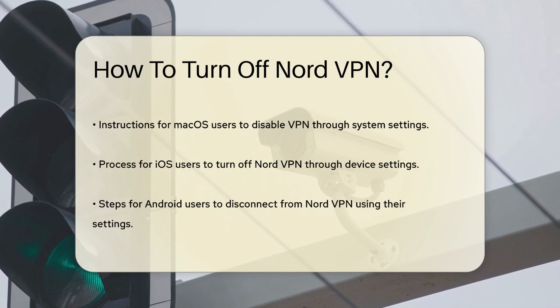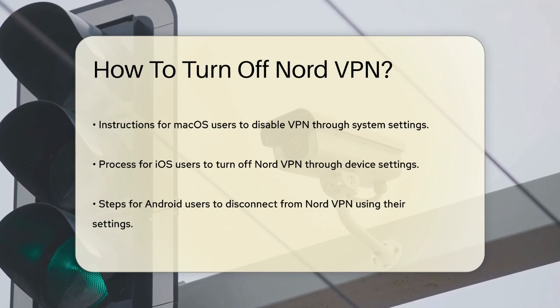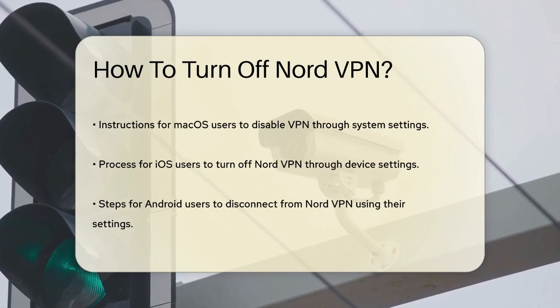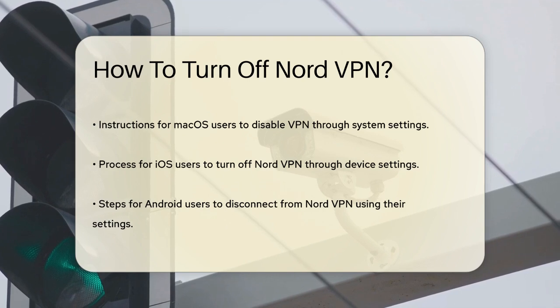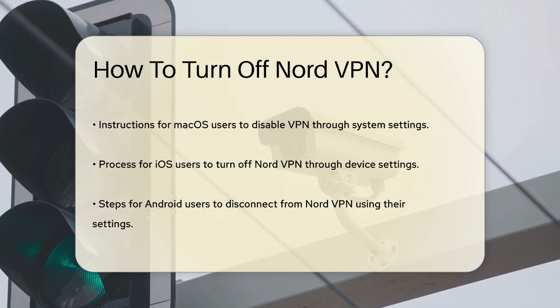If you're using an iOS device like an iPhone or iPad, the process is just as easy. Go to your Settings, then select General, and find VPN and Device Management. Here, you can toggle the VPN status to Not Connected.